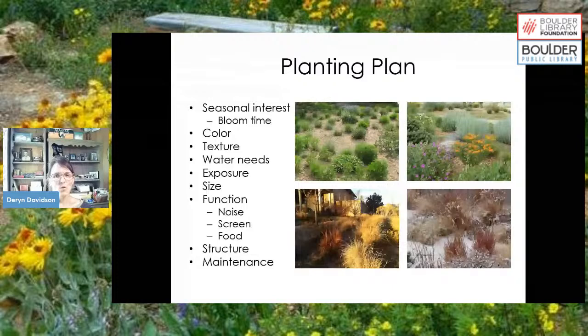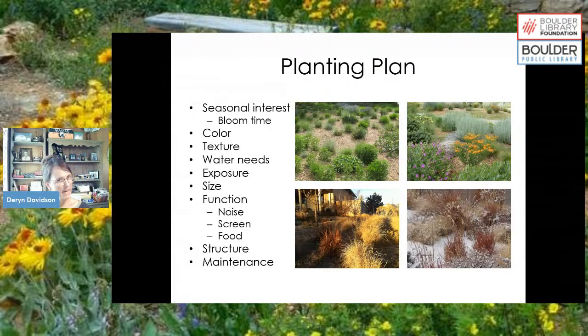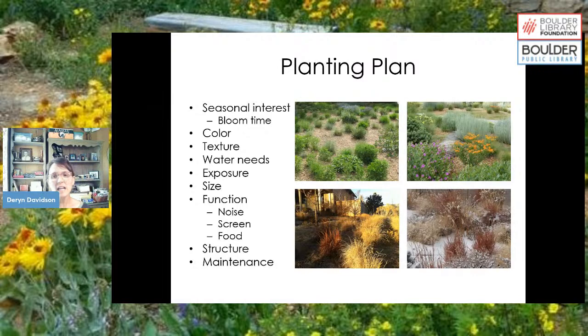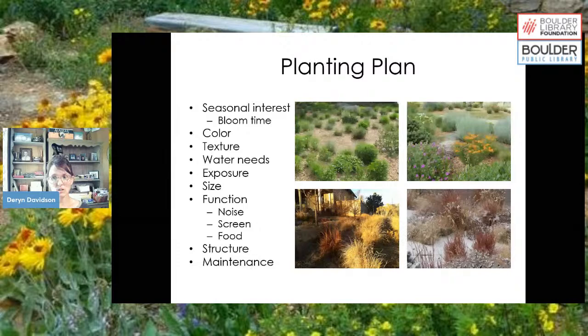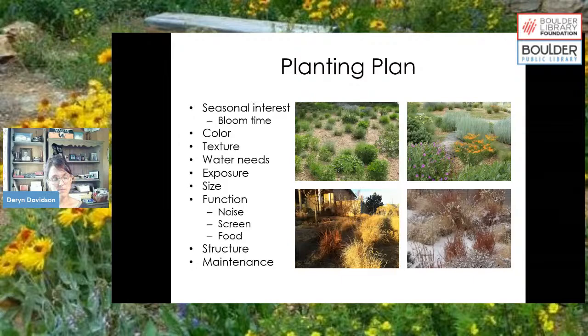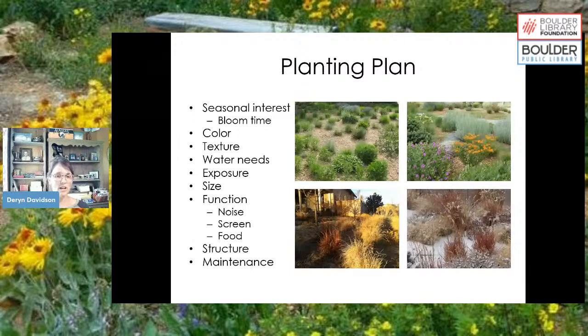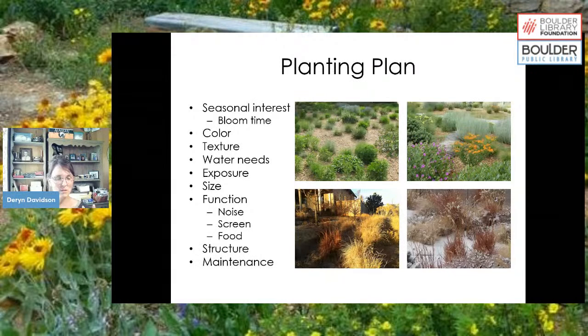Also think about color, plant texture, water needs for hydrozoning, sun/shade exposure, and how big your plants will get. Pay attention to mature plant size — all too often two shrubs planted close together in small containers grow to a five-foot spread and crowd each other out, reducing air circulation and causing disease. And think about function: do you want to block noise, create a screen, or bring in the sound of wind blowing through ornamental grasses?